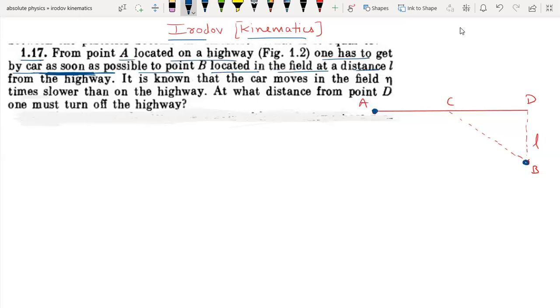This means the time should be minimum. The highway, which you can see here, is the highway. The road beyond, the ground, is the field.